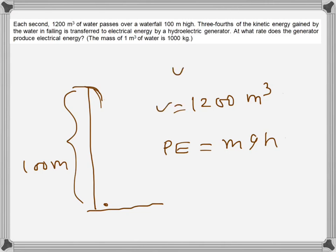Now volume is given which is this one, and density of water is one - one meter cube water's mass is thousand kg. So total mass here will be 1200 times 1000, which is 1.2 times 10 cube, times 9.8 which is g, and then 100.